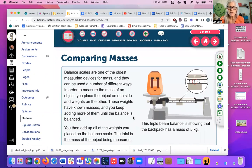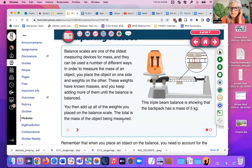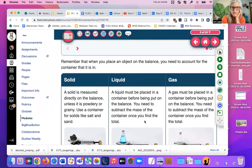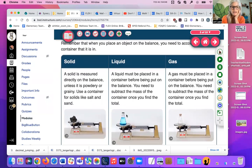Balance scales are one of the oldest measuring devices for mass and they can be used in a number of different ways. In order to measure the mass of an object, you place the object on one side and weights on the other. These weights have known masses and you keep adding more of them until the balance is balanced. You then add up all the weights you placed on the balance scale. The total is the mass of the object being measured. But that sounds the same as weight and we were learning that that is a little bit different. Remember that when you place an object on the balance, you need to account for the container that it's in.